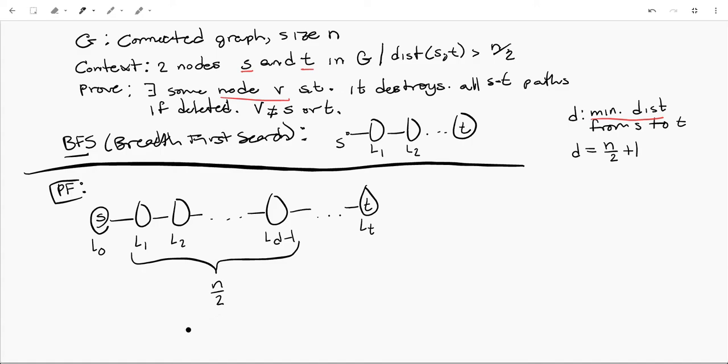So what we do now is we say, well, is there any layer for which there is a node that is the only node in that layer? Because if there is a layer where there's only one node in that layer, that means if we delete that node, we have destroyed our path from S to T, which is what we're trying to prove we can do.